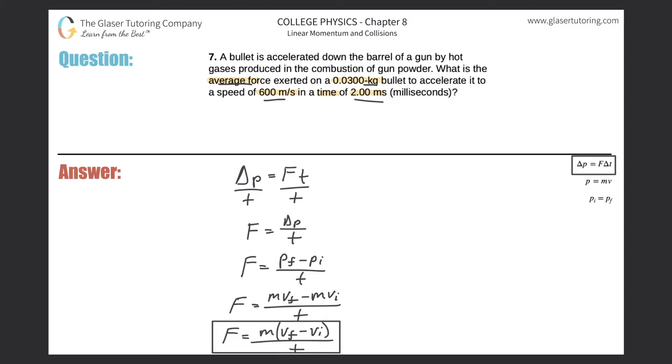Now what I need to do is basically figure out do I have these variables in order to calculate my force. Do we know the mass? Yes we do, 0.03. Do we know the final velocity? Yes, it reached a velocity of 600 meters per second. Do we know the initial velocity? Yeah, it started at rest, it was zero. And the time it took? Yes, they told us two milliseconds, but remember it has to be in seconds, so we're gonna have to do a little conversion there.